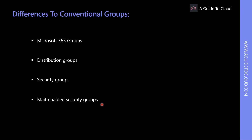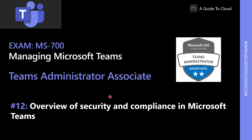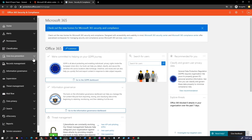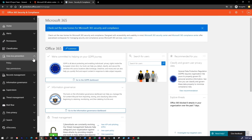Please note that mail-enabled security group membership cannot be dynamic and cannot contain devices. Now let's talk about an overview of security and compliance in Microsoft Teams. Microsoft 365 provides comprehensive security and compliance tools to help organizations comply with a multitude of legal and regulatory requirements. Data Loss Prevention (DLP) policy is used to identify, monitor, and automatically protect sensitive information across Office 365, including financial data, PII such as credit card numbers, social security numbers, and healthcare records.